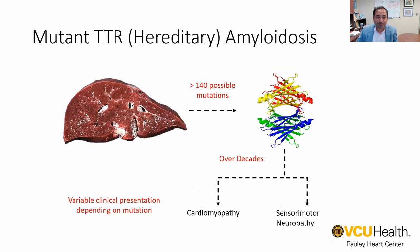Hereditary TTR amyloidosis is a type of TTR amyloidosis that arises because of a genetic mutation in the TTR protein, which leads to instability, dissociation, and amyloid formation. Clinically, patients who have hereditary TTR amyloidosis, which can arise from over 140 different mutations, develop symptoms depending on the mutation at different ages involving different organ systems. The presentations typically involve the cardiac muscle and/or neuropathies that can be both autonomic and sensory motor.